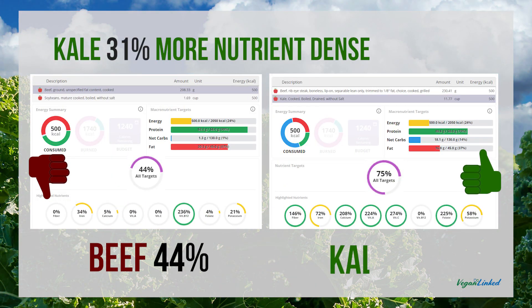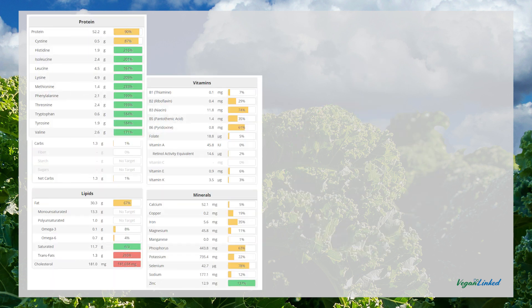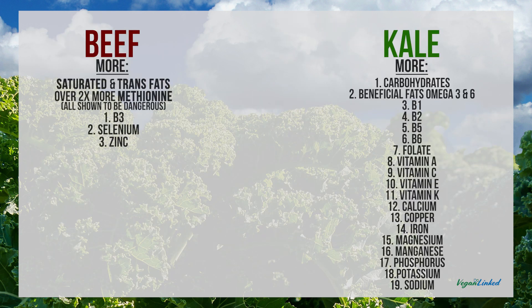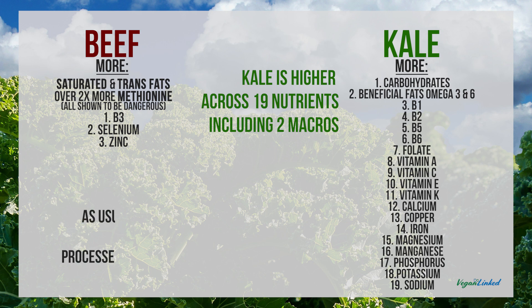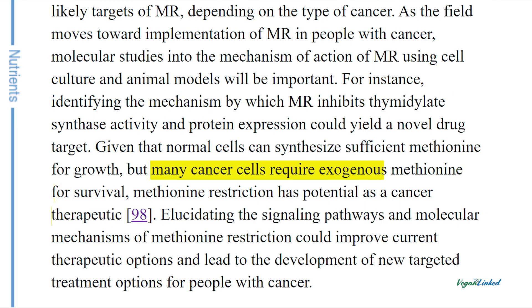Kale is 31 percent more nutrient-dense than beef. Kale met 75 percent of all targets; ground beef still only 44 percent. Again, here's the nutrient breakdown, with highlighted nutrients being the ones that are higher. Kale came in higher across 19 nutrients including two macros. And that third macro, protein, was the same as beef except beef had dangerous levels of methionine, the sulfur-containing amino acid that's been shown to be detrimental to health.